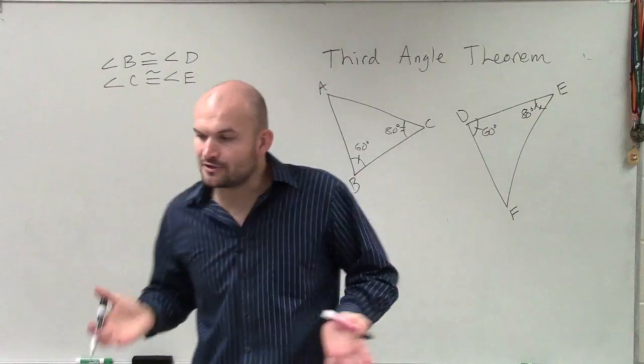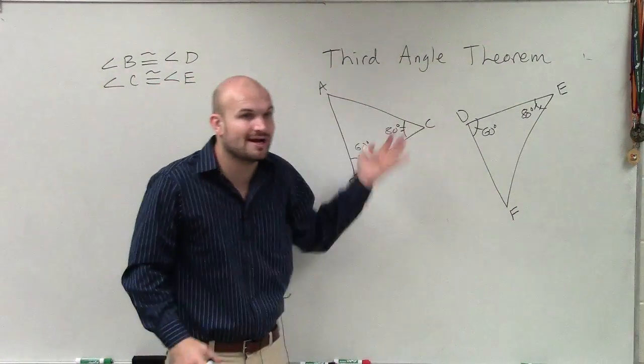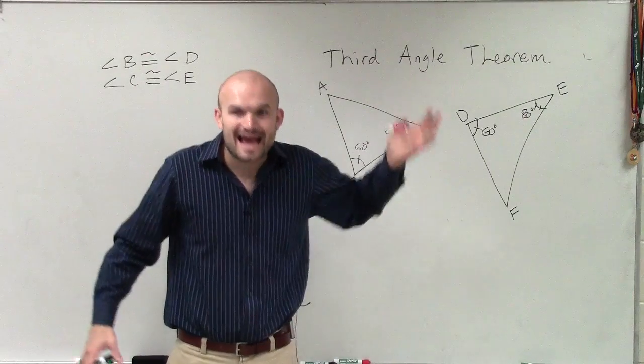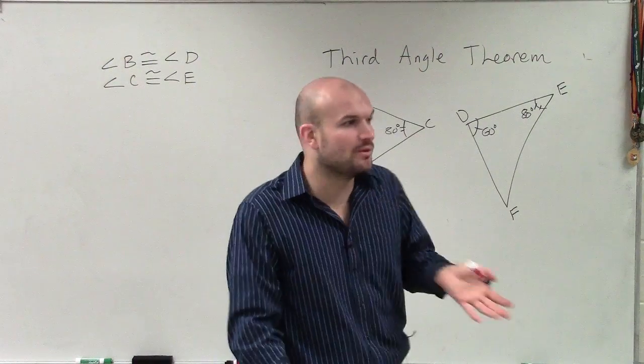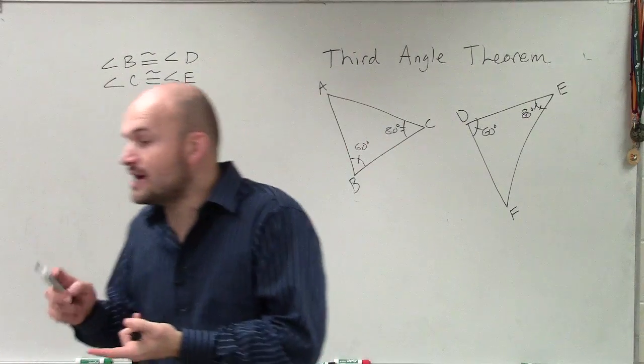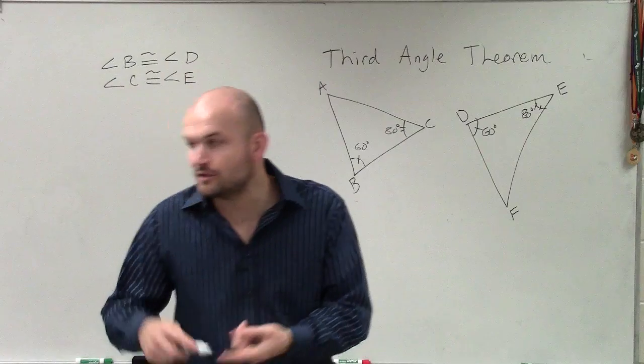So what the third angle theorem says is if you have two angles that are congruent for two triangles, the third angle has to be the same, because all triangles add up to 180. I don't care what type of triangle it is—right triangle, obtuse, acute, equiangular, it doesn't matter.